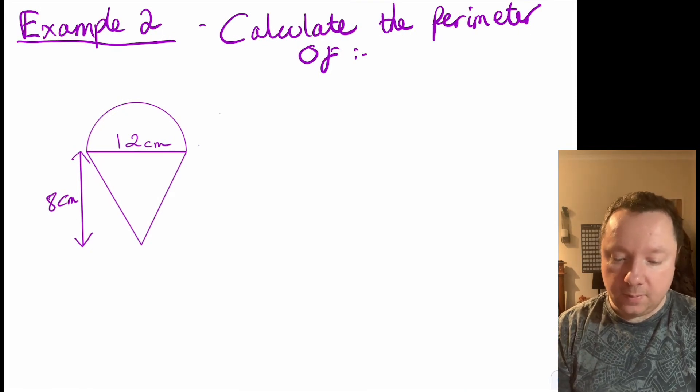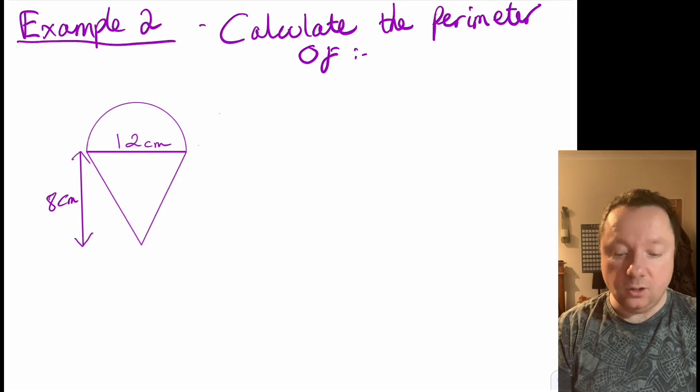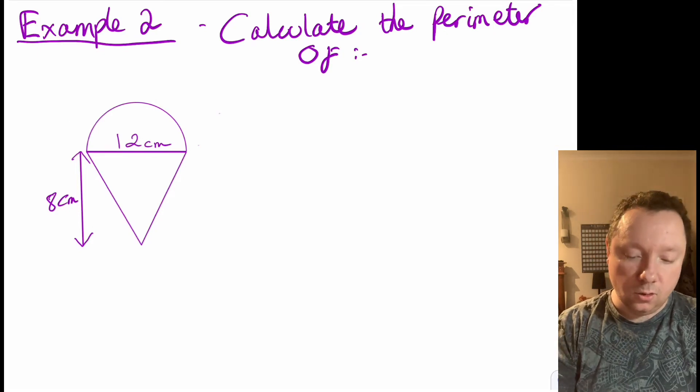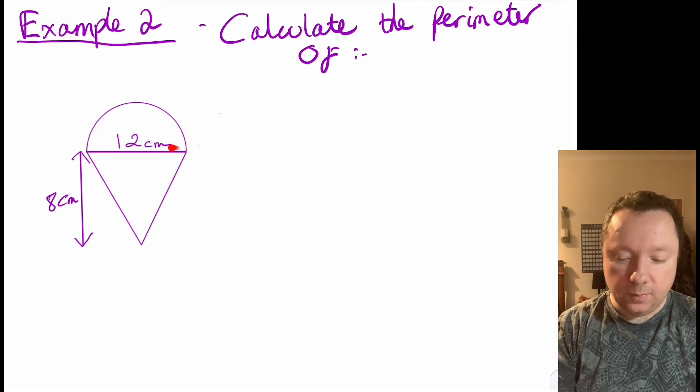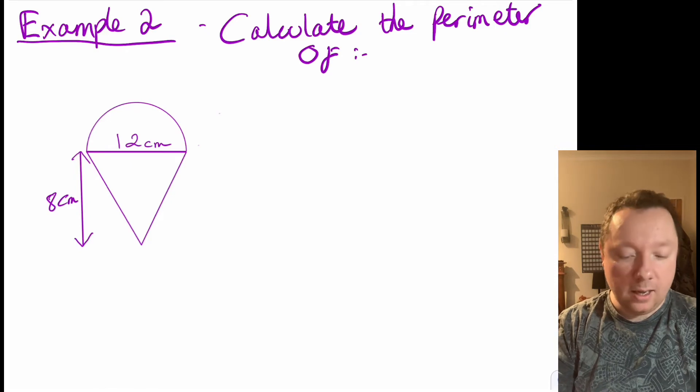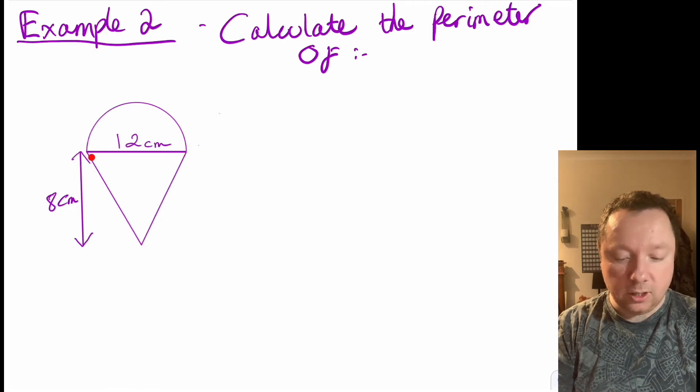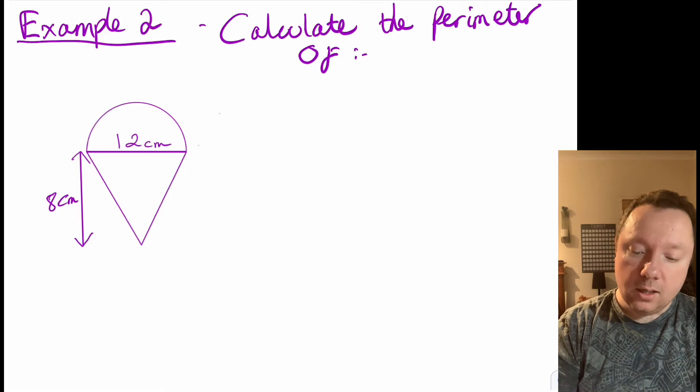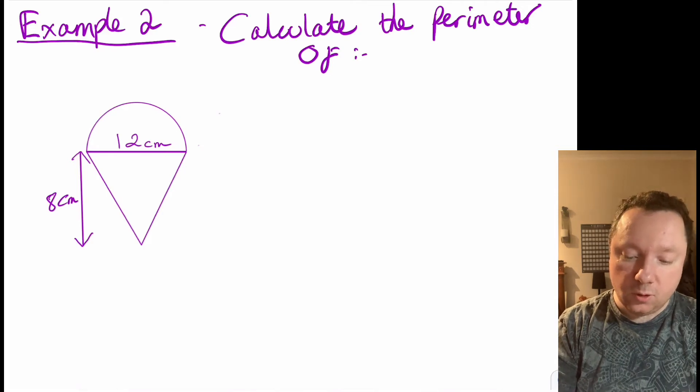So example two says calculate the perimeter of, and we've got this shape here. It looks a bit like an ice cream cone. So notice we've got a semicircle again, which should be nice and easy because we've just done one, but then we've got a triangle. Now this is meant to be an isosceles triangle. So we'll do the same as we did before and split it up into two shapes, shape one and shape two, and looking at shape one.